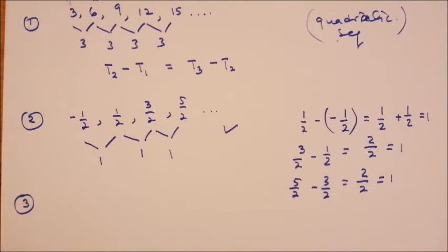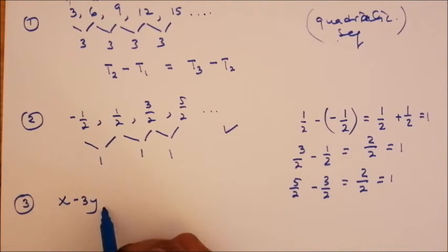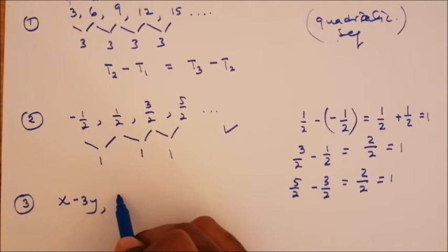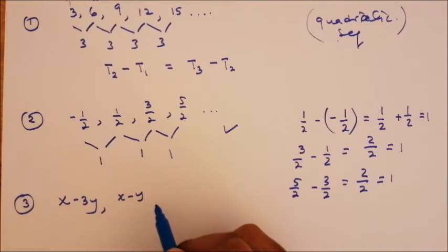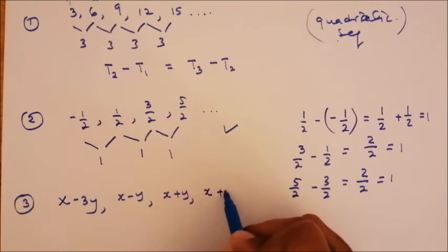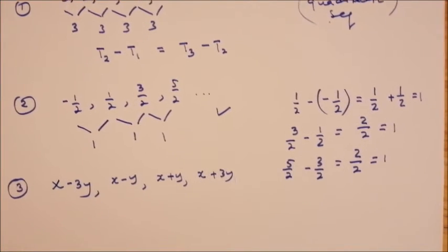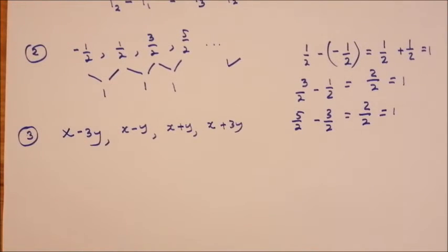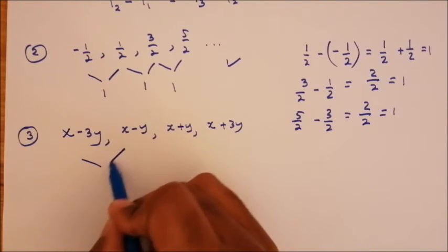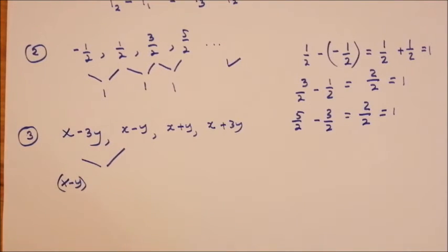Now let's look at sequences that don't necessarily have numbers. Suppose you're given: first term x minus 3y, second term x minus y, third term x plus y, fourth term x plus 3y. We have to determine whether this is arithmetic. We'll find the second term minus the first term: (x minus y) minus (x minus 3y).